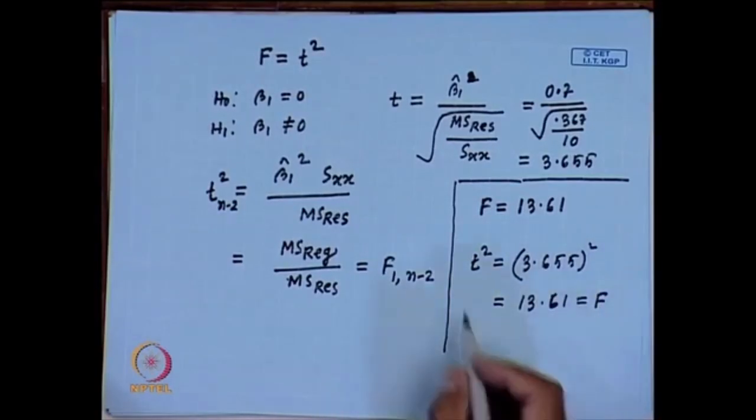Whether you use the t statistic or the F (ANOVA) approach to test H₀: β₁ = 0, they are basically the same for simple linear regression. However, once we will be talking about multiple linear regression, we need to follow the ANOVA approach only. Next I will be talking about the coefficient of determination.